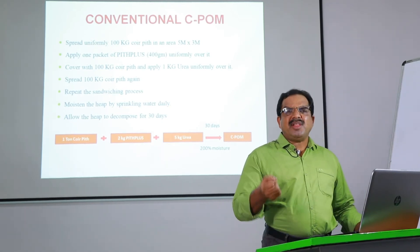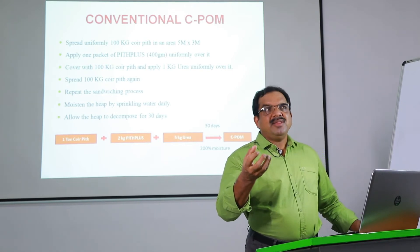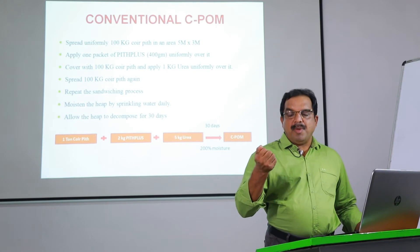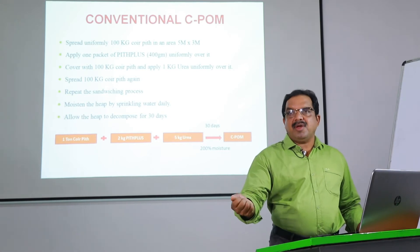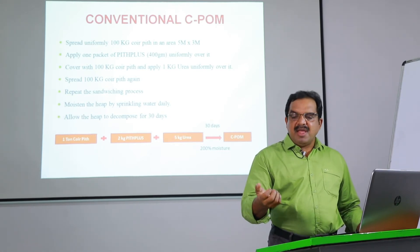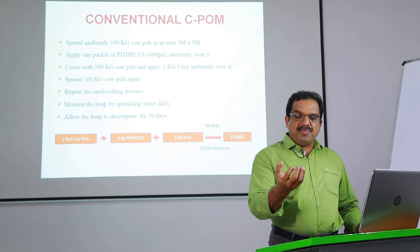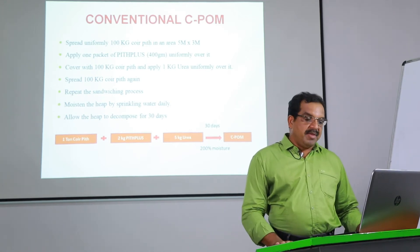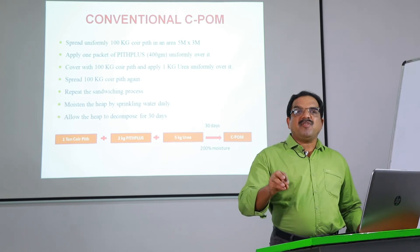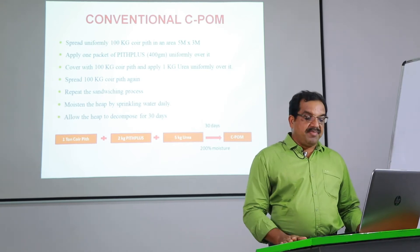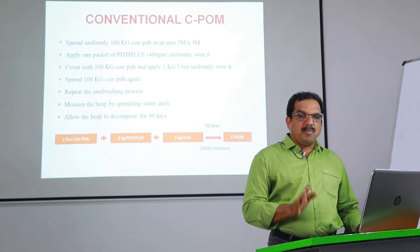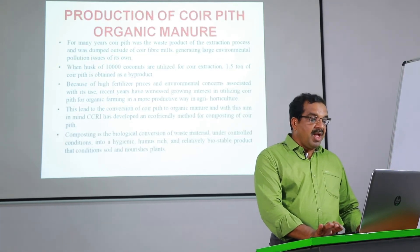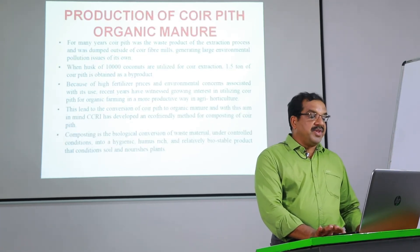200% moisture is something even a farmer can assess using a simple method. Take a small handful of coir pith material and press it. If even one drop of water comes out, that indicates sufficient moisture. Otherwise, you need to sprinkle some water, because maintaining moisture is very essential in coir pith composting.